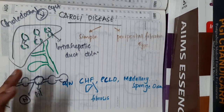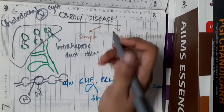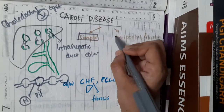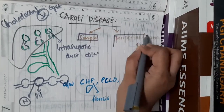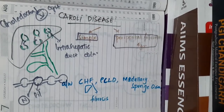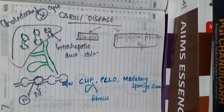Caroli's disease is of two types. One is simple Caroli's disease, and the second is the periportal fibrotic type of Caroli's disease.